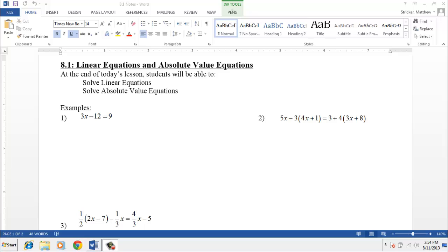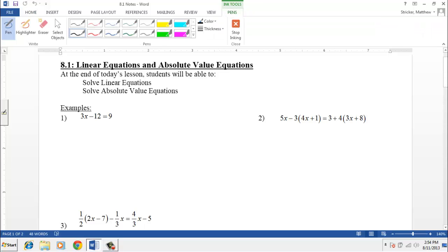Let's first just review with a basic linear equation. Remember when we're solving equations, we're trying to get the x or whatever variable it is by itself. We're trying to isolate it, and we use inverse operations to do so. In this first example, the first thing we're going to do is get the number negative 12 over to the other side. We do that by adding 12 to both sides.